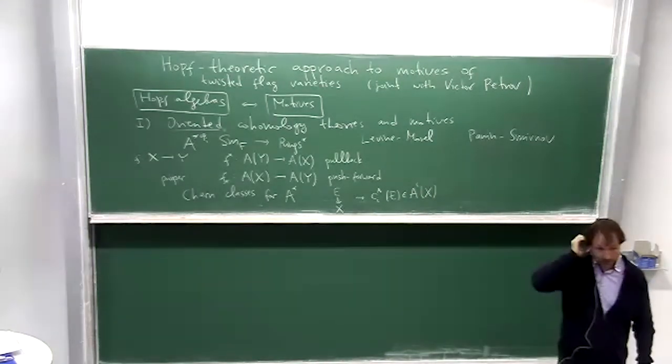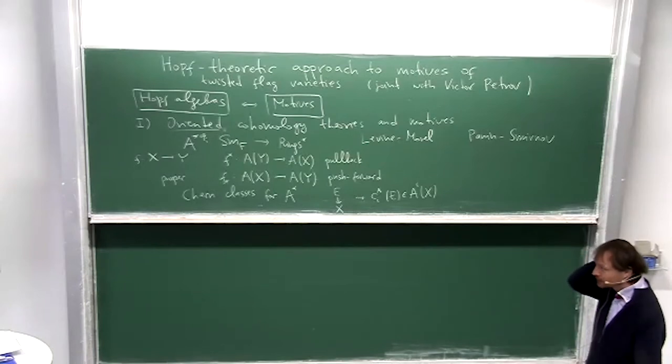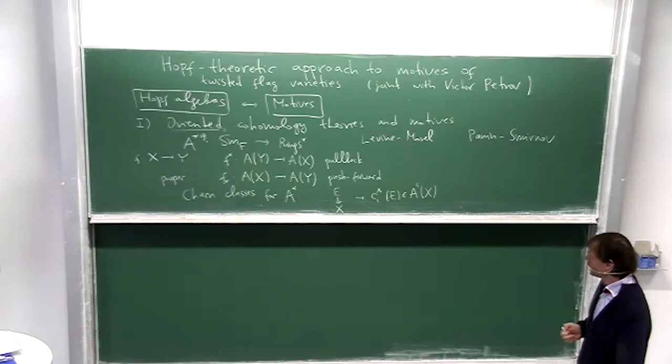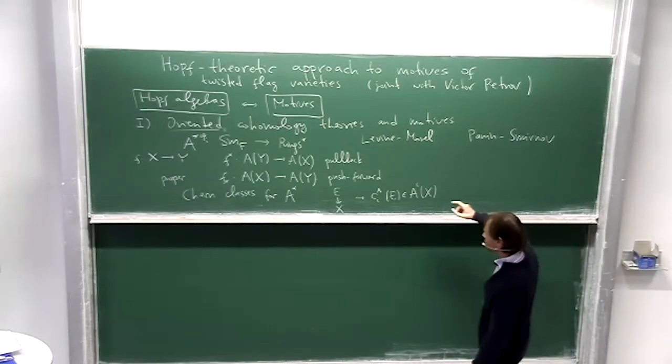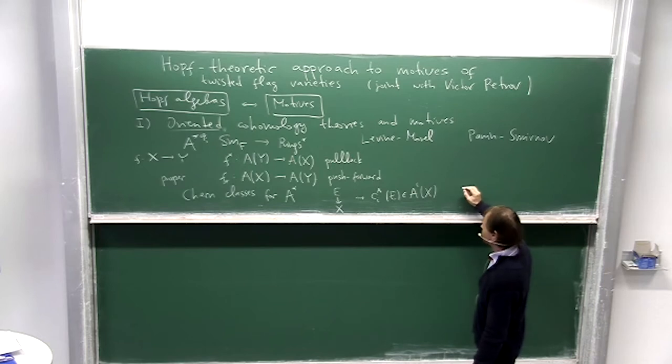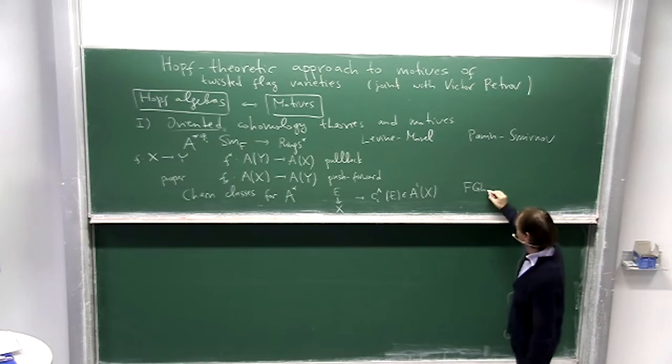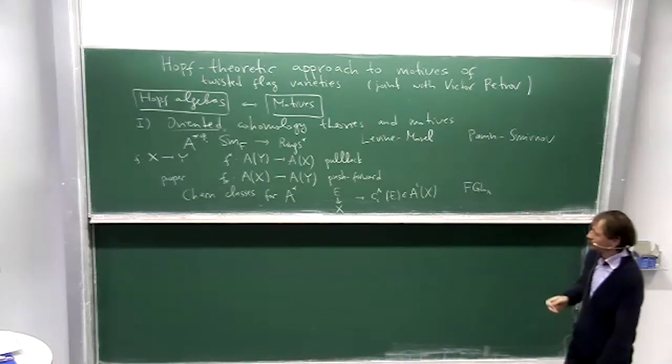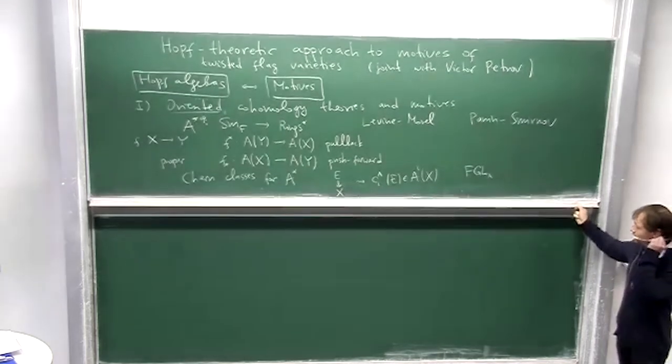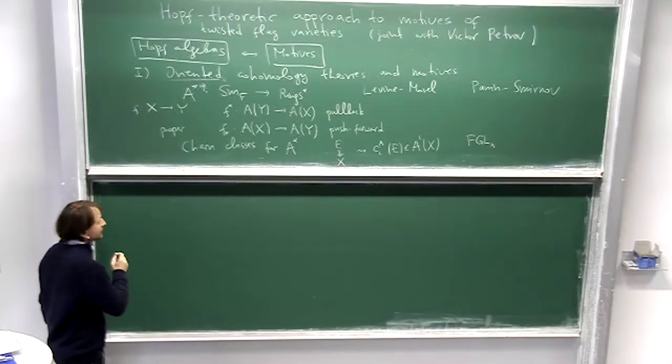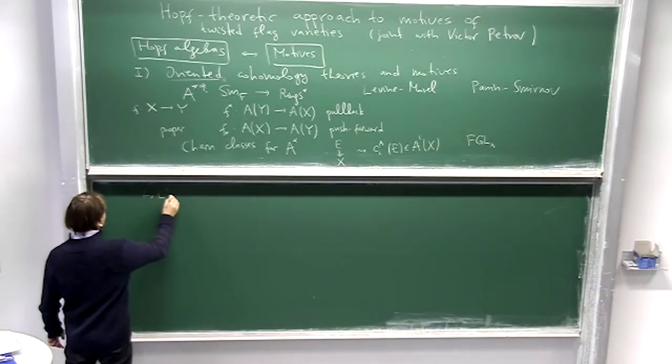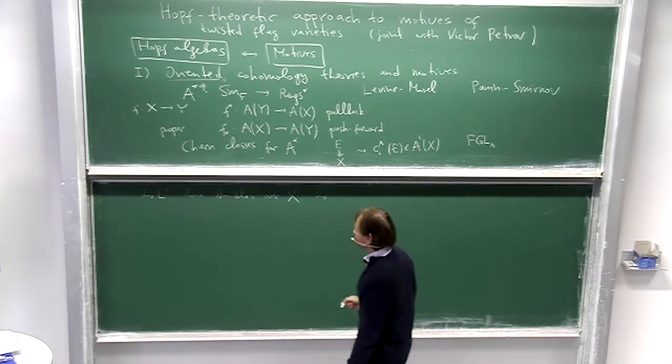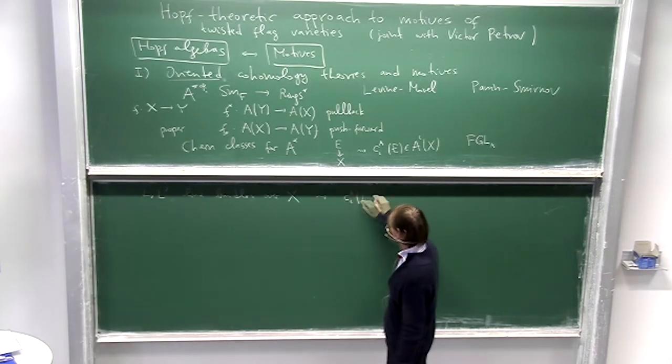And here they satisfy some system of axioms. So the most important property which they need is that there is a formal group law associated to our theory A. What does it mean? You have two line bundles L and L prime, so then we can try to compute the first Chern class of L tensor L prime.